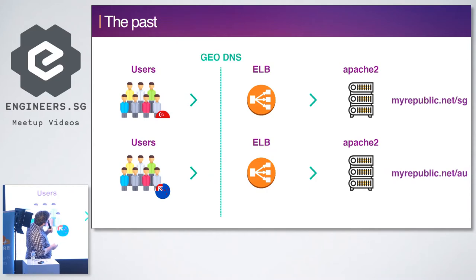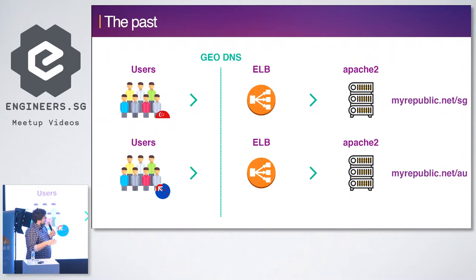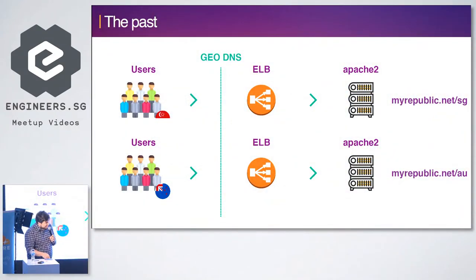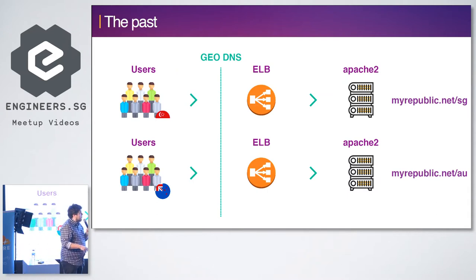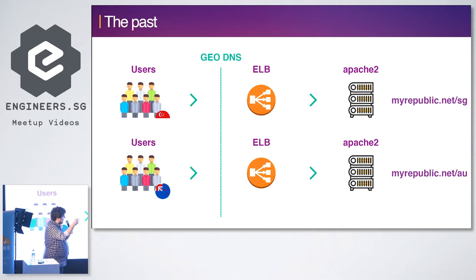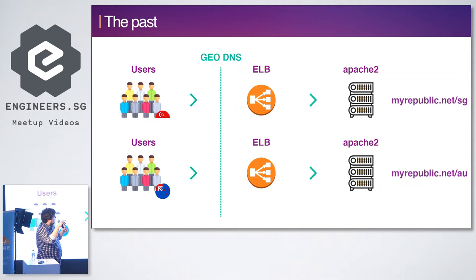Then looking into a more unified user experience — we wanted to provide one domain and not country domains anymore, so we actually moved to mypublic.net. The same concept as Apple, where if you're in the US you visit apple.com and get redirected to apple.com/us, or visiting from Singapore goes to apple.com.sg. We implemented the same concept, going to AWS and setting up GeoDNS in Route 53, so the user in Singapore is identified as a Singapore user going to the Singapore-based region.